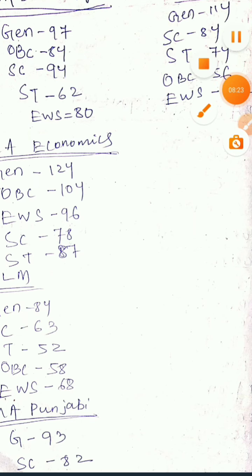Next, for MSc Chemistry — Applied Chemistry: General is 212, OBC is 207, SC is 162, ST is 178, EWS is 157. Next, for MSc Chemistry — Computational Chemistry: General is 216, OBC is 197, SC is 149, ST is 169, EWS is 130.